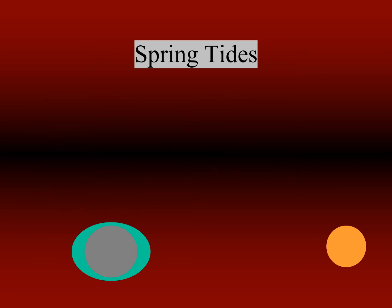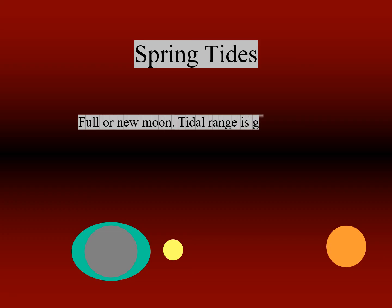Spring tides are tides of an increased range which occur during full or new moon, especially when the sun and the moon are on the same side. Approximately twice a month, around new moon and full moon, when the sun, moon, and the earth form a line, the tidal force due to the sun reinforces that due to the moon, so the tidal range is at its maximum. This is called the spring tide — not named after the season, but from the meaning 'to spring' as in jump, burst forth, or rise.